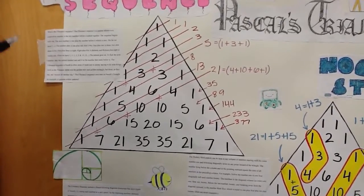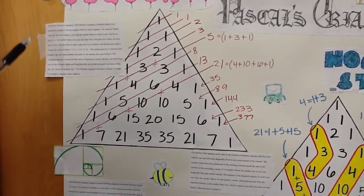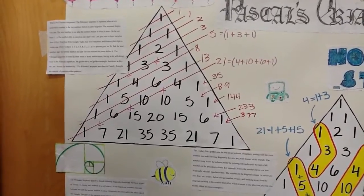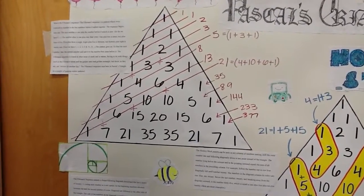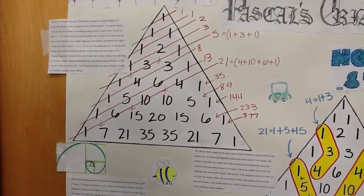And each diagonal corresponds consecutively with the numbers. So it'll go 1, 1, 2, 3, 5, 8, and so on.